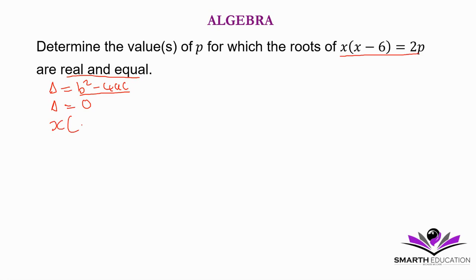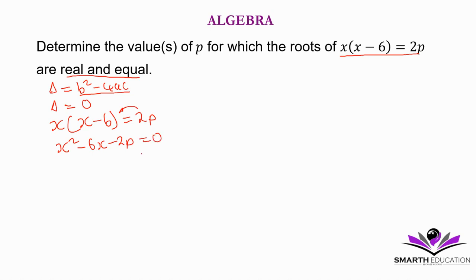So we have x times x minus 6 is equal to 2p. Let's distribute x: it's going to be x squared minus 6x. Then we transpose 2p to this side, giving us x squared minus 6x minus 2p is equal to 0. So here a is equal to 1, b is equal to negative 6, and c is equal to negative 2p.